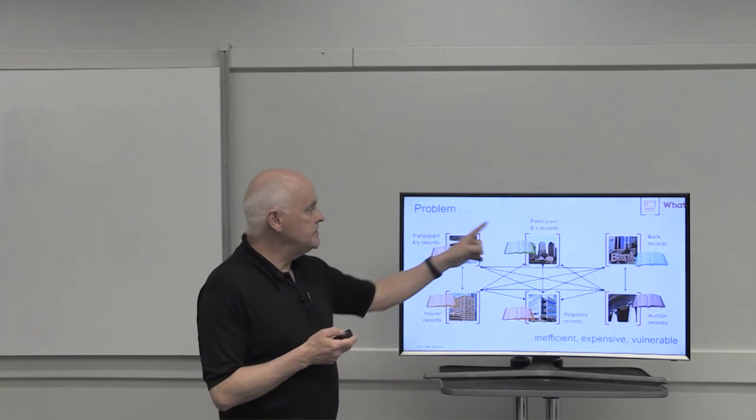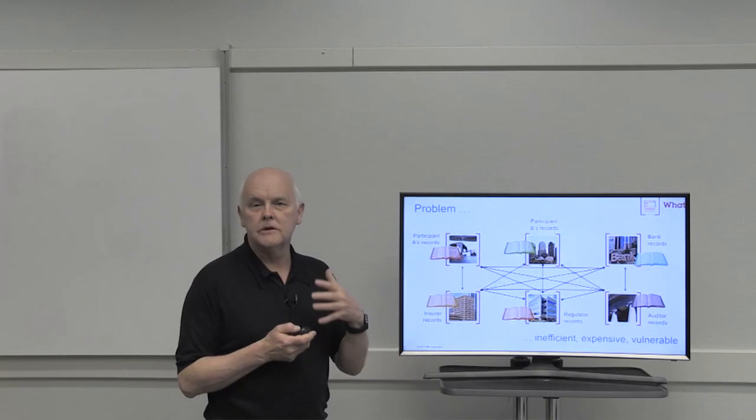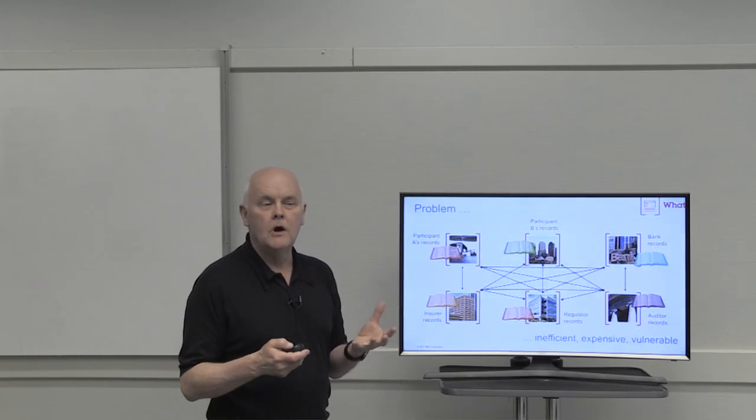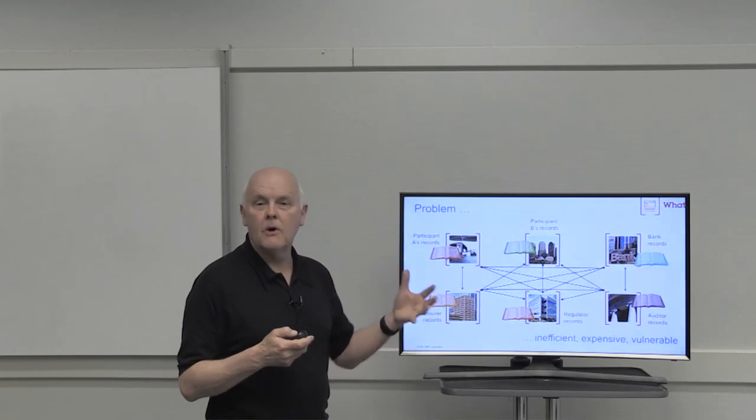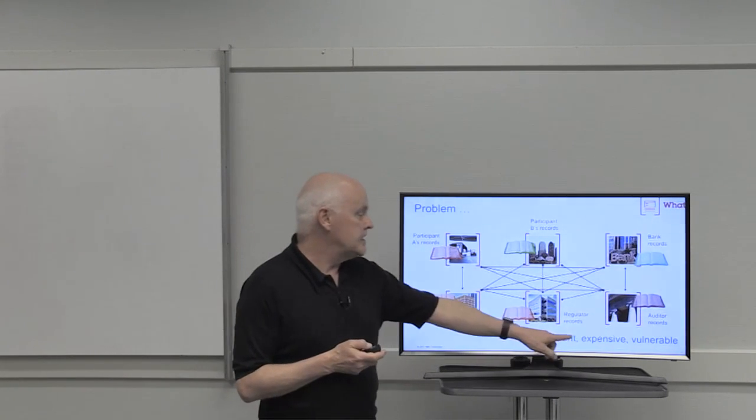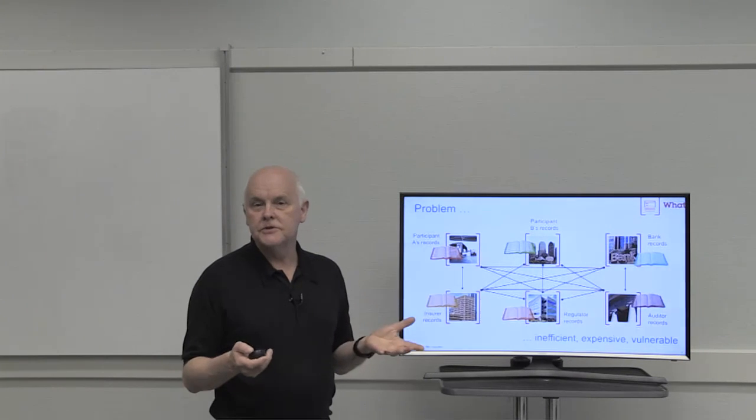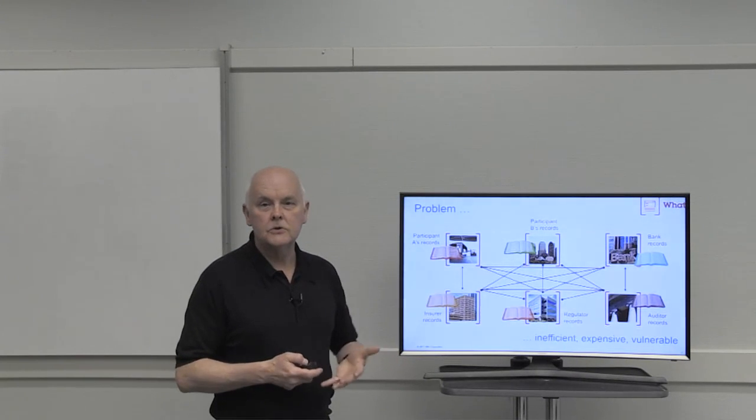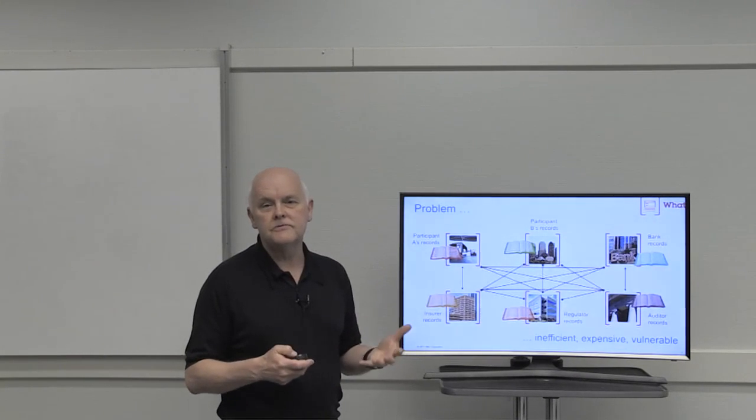What do I mean by that? Inefficient means that each of the different parties in the business network need to run their own form of the business process to update their ledger. Effectively, they're doing that in a duplicative way. It's expensive in that if you were to do things like internal and external audit, it takes an awful lot of time and effort to do that across the business network.